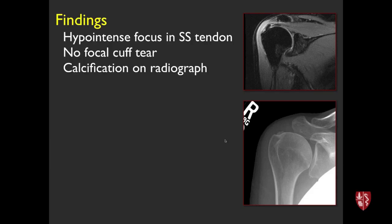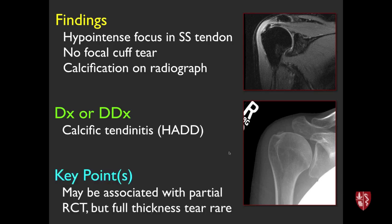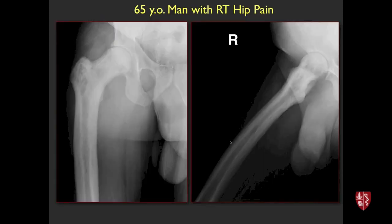Coronal MRI and radiographs here. There's a hypointense focus in the supraspinatus tendon with no obvious full cuff tear, and there's calcification on the radiograph. This is a classic example of calcific tendonitis — hydroxyapatite deposition disease. One useful point: it's very rare to have a full thickness tear when you identify HADD. There may be partial thickness tearing, but usually patients present with pain before the cuff is completely torn.